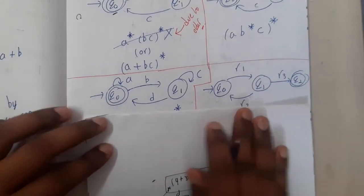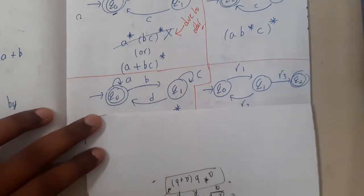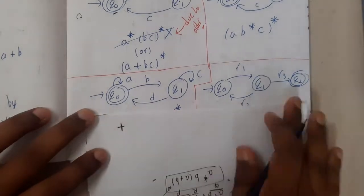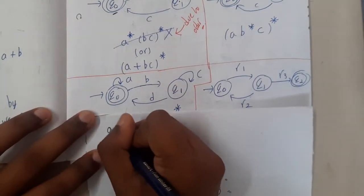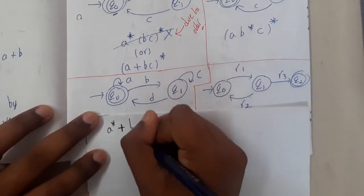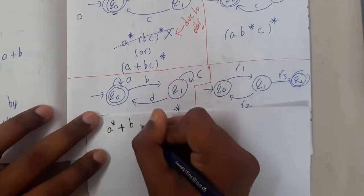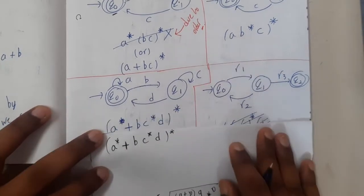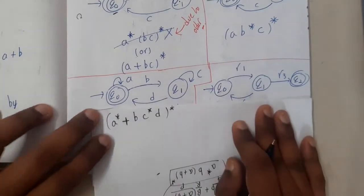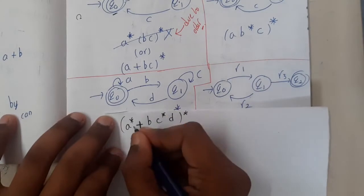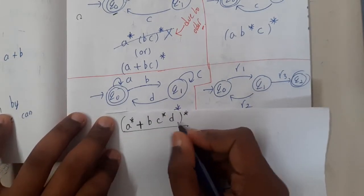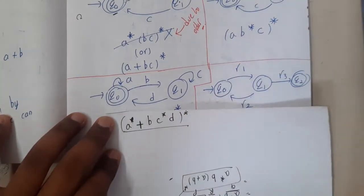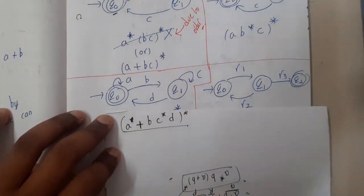Whenever we have two options, always write plus first to reduce confusion. Here we have a loop, so it is a*. After that there is a mandatory 'b', then 'c' is also there, then a* again, then mandatory 'd' — and I can have this whole thing infinite times. In every equation things can be minimized, but our goal is not to minimize — our goal is to get the correct answer.